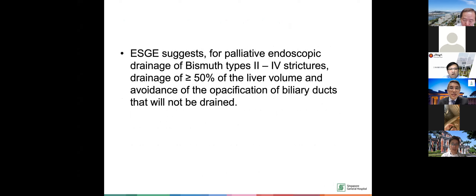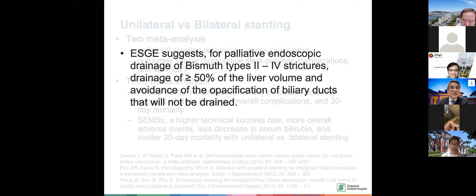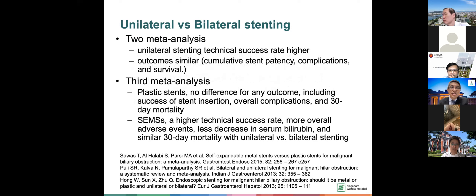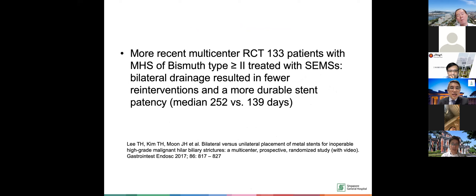By ESG guidelines, drain more than 50% and do selective drainage — don't opacify areas you don't intend to drain. Regarding unilateral versus bilateral: two studies show unilateral has higher success rates but similar outcomes. A third analysis showed no difference for any outcomes. However, metal stents show higher technical success rate and better overall 30-day mortality. A more recent Korean RCT comparing bilateral metal stents for more than type 2 found bilateral stenting was better in terms of fewer interventions and better stent patency.